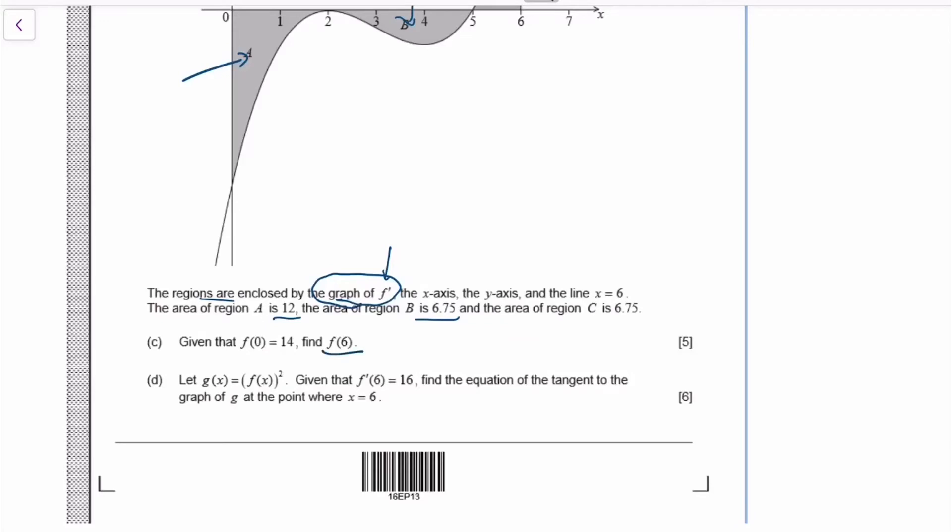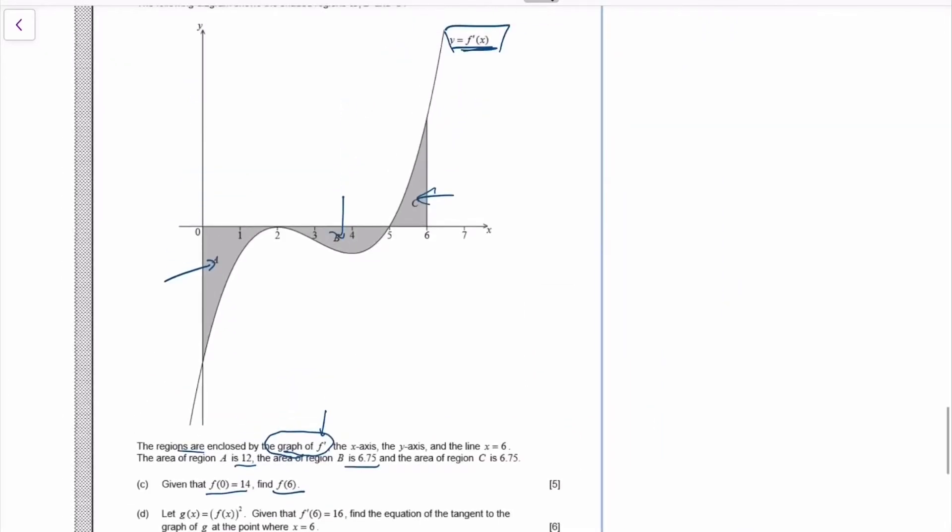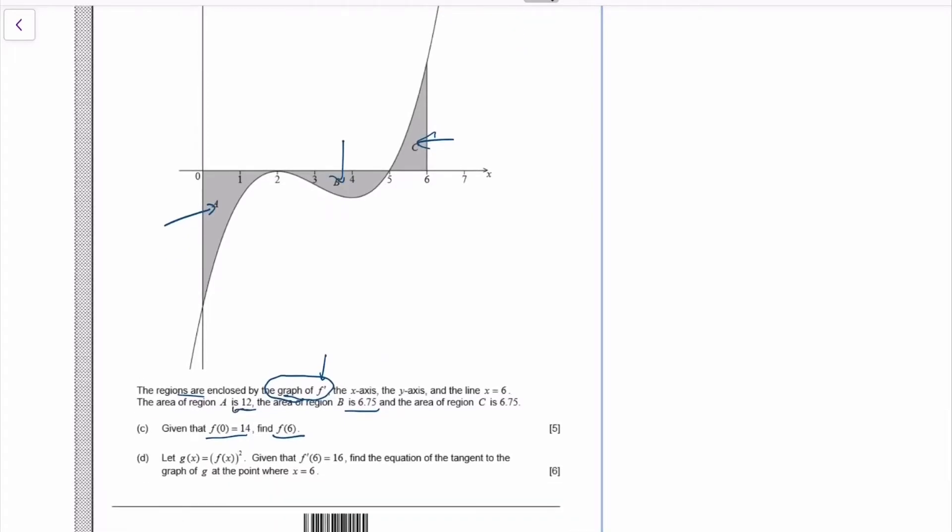And somehow they ask for the value of F when X is 6. Well, they give you the value of F at 0. So at first that seems to be totally irrelevant. The only thing I have is F prime X and I don't even know what F prime X is. I only have the graph and I only have some area under the graph.